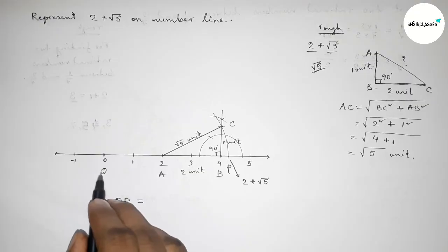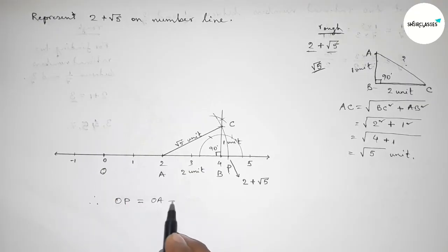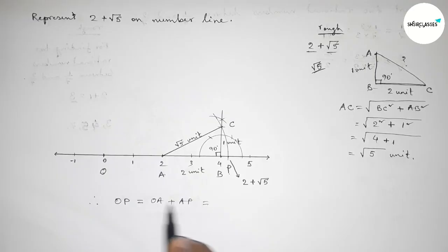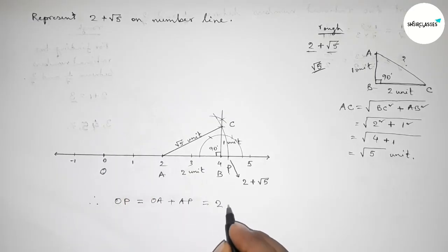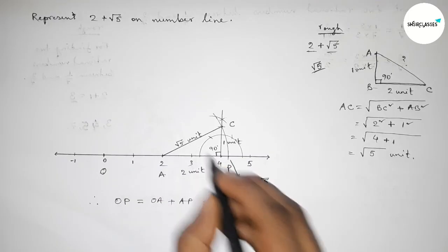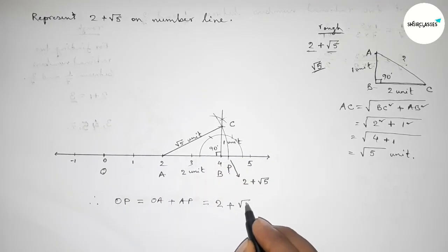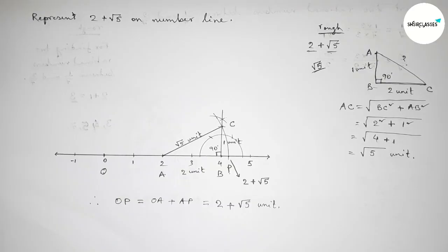Therefore we can write OP equals OA plus AP. We know OA equals 2 unit length, and AP equals root 5, so OP equals 2 plus root 5 unit length. That's all — thanks for watching. If this video is helpful to you then please share it with your friends. Thanks.